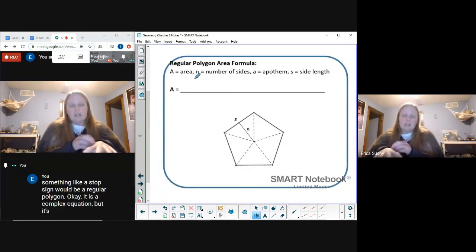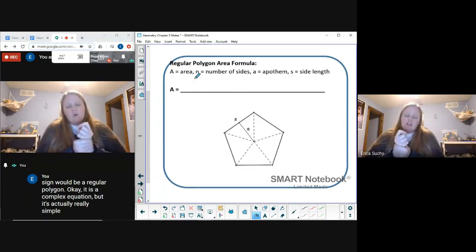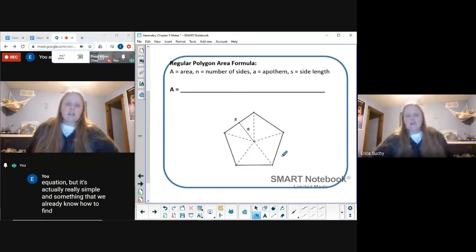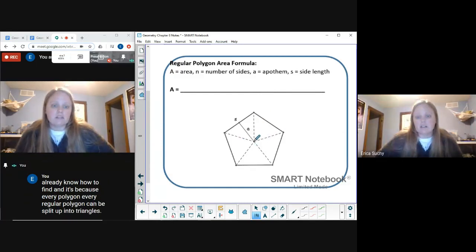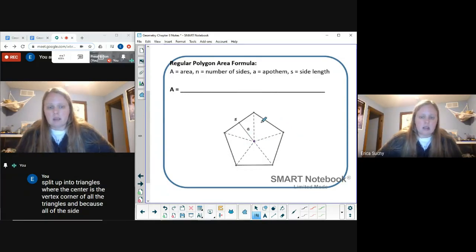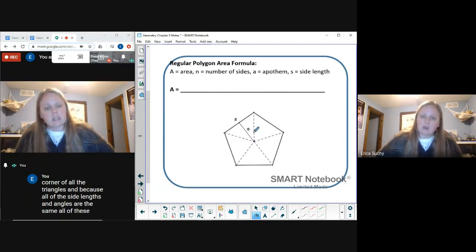It's something that we already know how to find because every regular polygon can be split up into triangles where the center is the vertex corner of all the triangles. And because all of the side lengths and angles are the same, all of these triangles will be congruent.